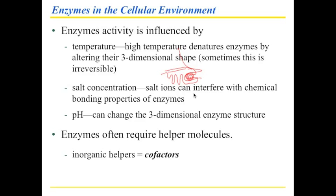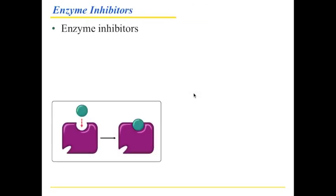Enzymes also require helper molecules. Some of these are inorganic. We call those cofactors. And these may be metal ions. It could be small molecules of various types. Or we call them coenzymes, organic helper molecules. So just sometimes, like, your key for your lock needs to be greased a little bit. This is what the grease is for the enzyme reaction.